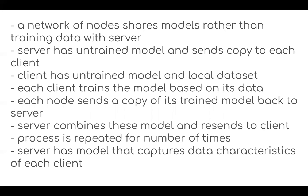Basically, a network of nodes shares models rather than raw data with the server. The server has an untrained model and sends a copy to each client. Each client has an untrained model and a local dataset. Clients train the model based on their data, then send a copy of the trained model back to the server. The server combines and averages these models to generate the global model. This process is repeated until the server has a model that captures the data characteristics of each client.